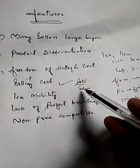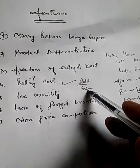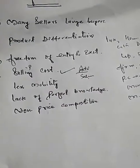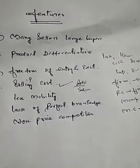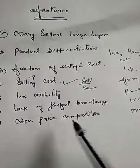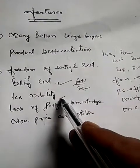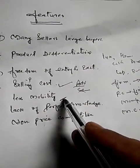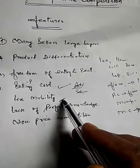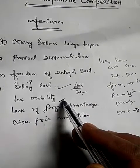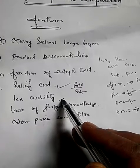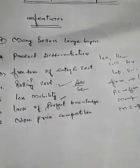Another feature is that there is no perfect mobility of factors, goods, and services among different firms in the market. Mobility is less compared to perfect competition, where there were no barriers and factors could move freely. Under monopolistic competition, there is less mobility of factors of production.